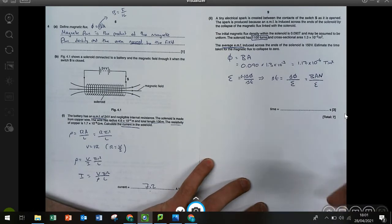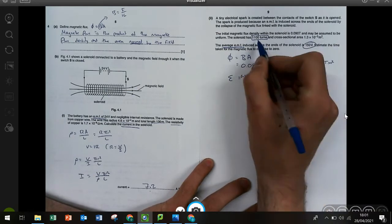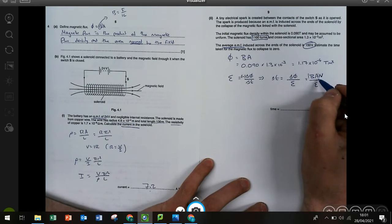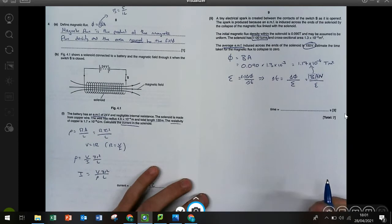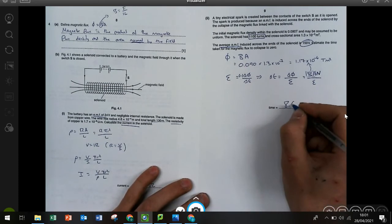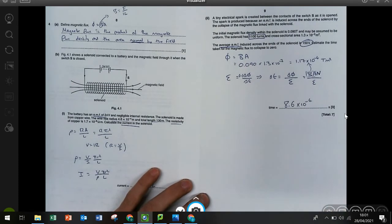So now it's a case of plugging in the numbers. We've got the EMF, we've got the turns, and we've obviously got BA from this bit here. So when you plug in all the numbers, you get the time of 8.6 times 10 to the minus 4 seconds.